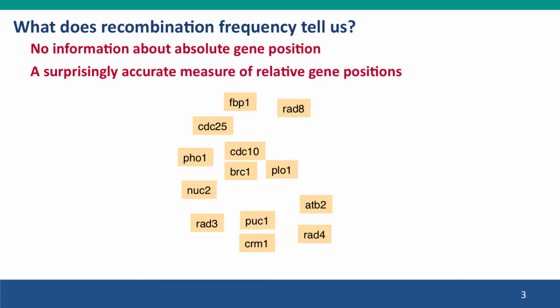So first, what does recombination frequency tell us about gene position? It tells us absolutely nothing about the absolute gene position — which gene is on which chromosome. But it tells us a very accurate measure of relative gene positions: how close genes are to each other, and whether they're on the same chromosome or different chromosomes.